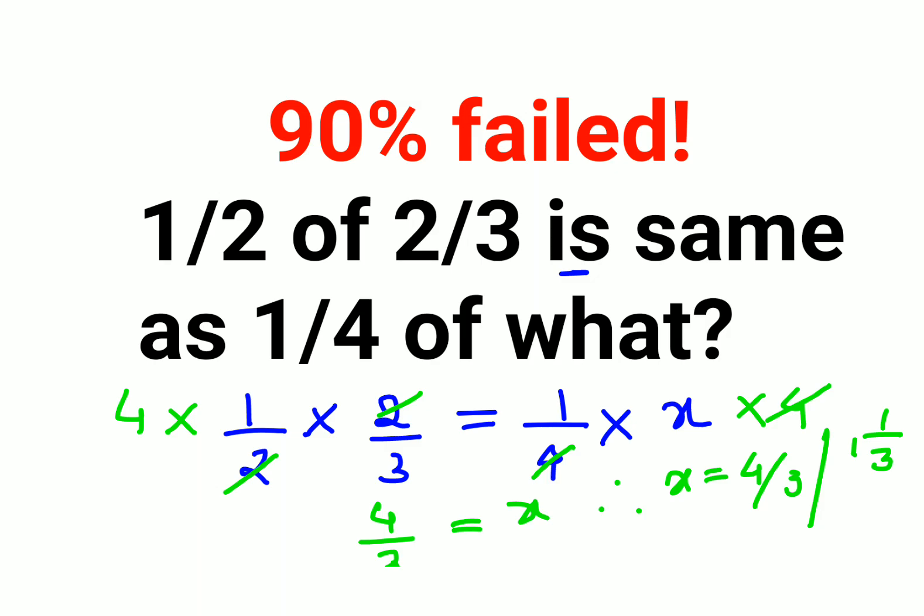And if you want to write it in terms of decimal, I can also say this is nothing but 1.33 recurring. So either the answer is this one, 4 by 3 or 1 and 1 by 3 or 1.33 recurring.